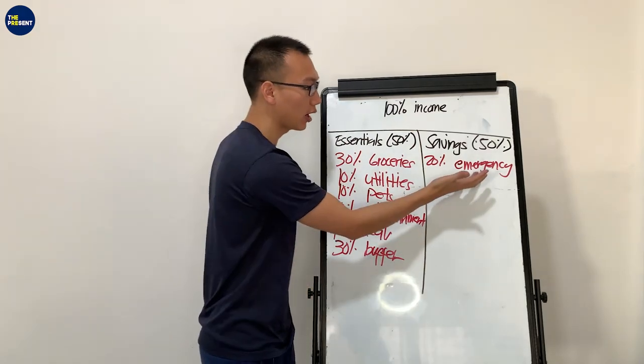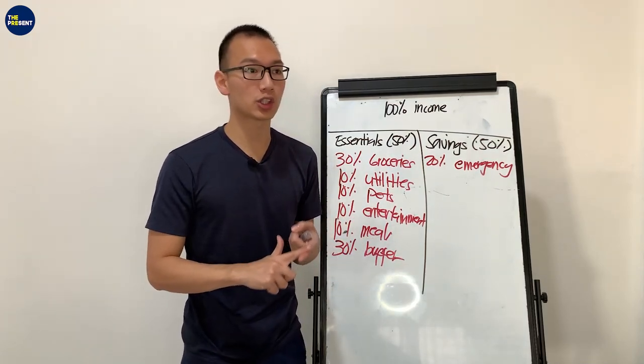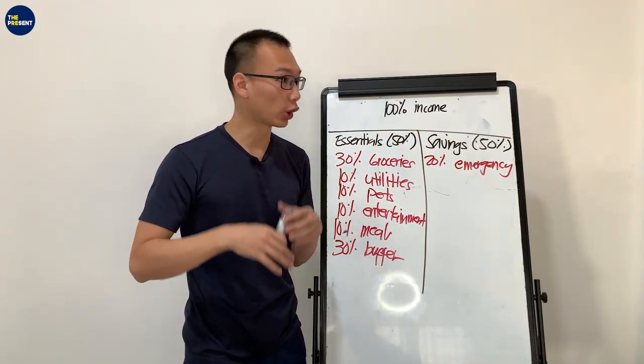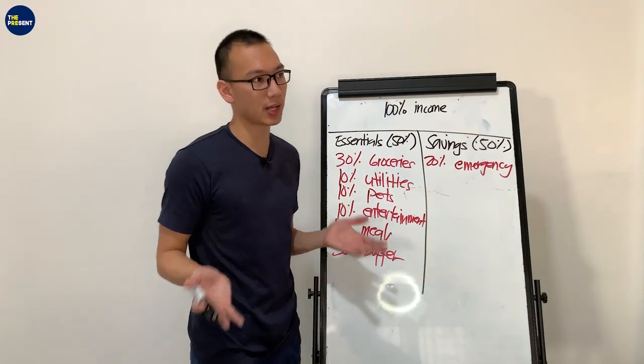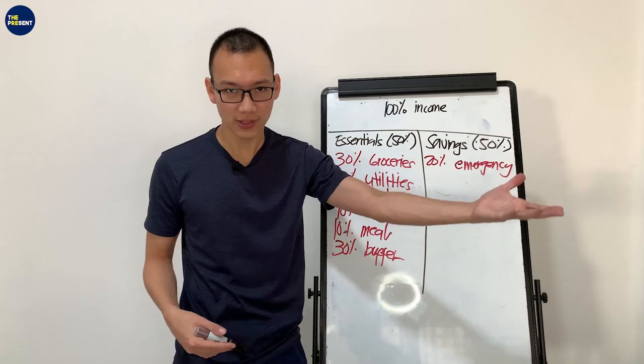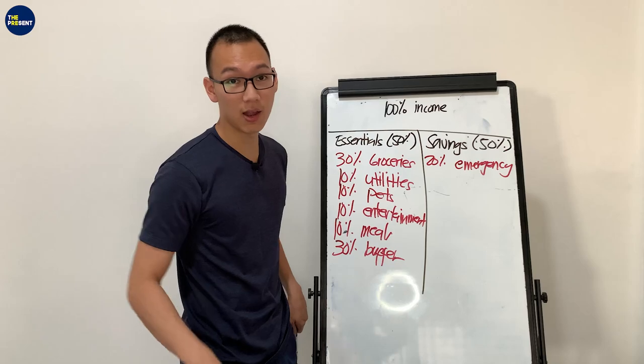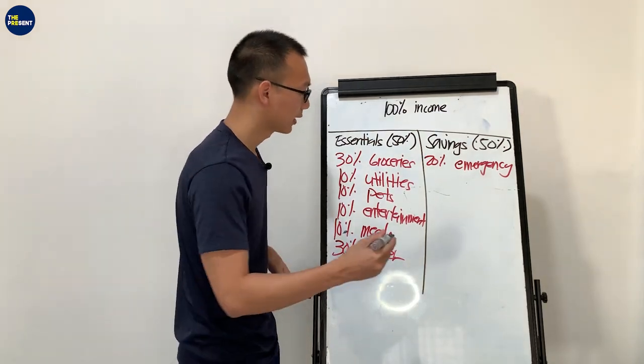Now when we talk about emergency account, this is the money that we are using for our insurances like life insurance, health insurance, car insurance, or even our medical bills. Sometimes we go to the doctor for some reason and we're going to pay for their services, professional fees, or medication. That's the account that we are using for that specific reason.